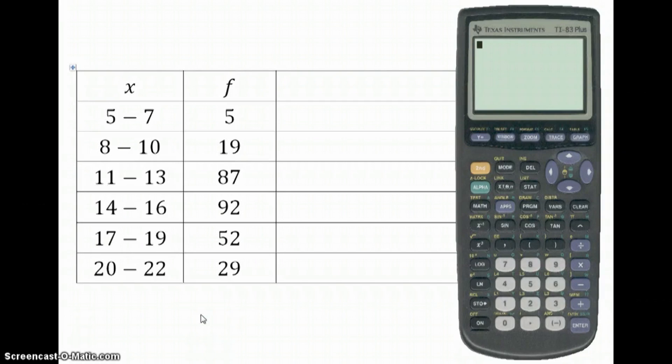So this is the set of data that we've just been looking at, and I'm now going to show you how to find the median and the interquartile range using our calculator. So what we're going to need to do is go onto stat, and then we're going to have to input the data into our lists. So we want this edit part here, so press enter.